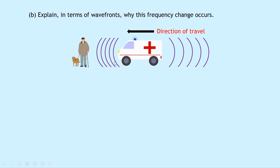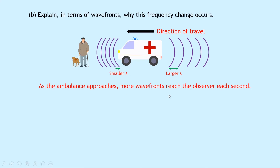We can mark on the wavelengths for the wave fronts on each side. On the left hand side, the gap between two wave fronts will be quite a small wavelength, whereas on the right side the gap between any two wave fronts will be a larger wavelength. So we've got a larger wavelength for the waves behind the ambulance and a smaller wavelength for the waves in front. Remember a smaller wavelength means a larger frequency, so the pedestrian will hear a sound with an increased frequency. As the ambulance approaches, more wave fronts reach the observer each second, meaning they observe a higher frequency.